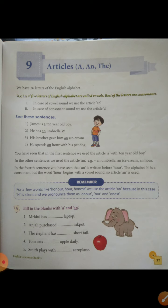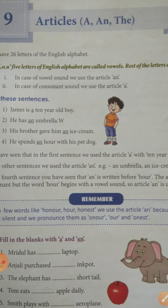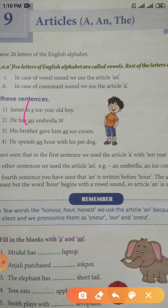I hope you have understood this. Now let's see these sentences. You can see here: James is a 10-year-old boy.